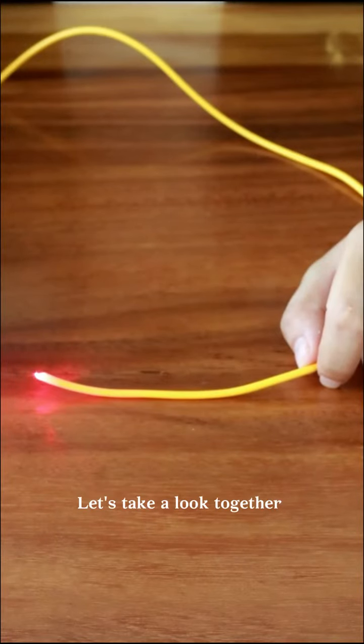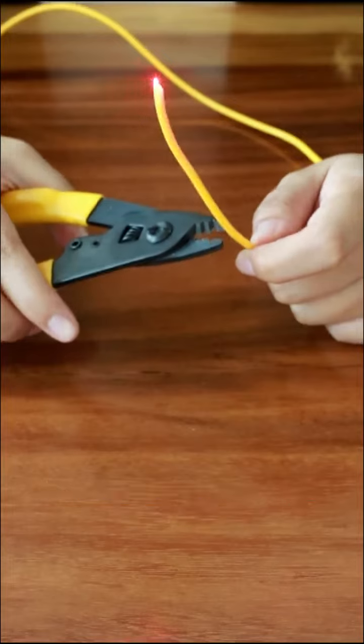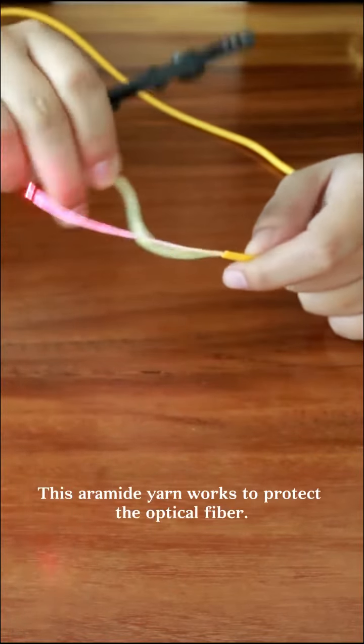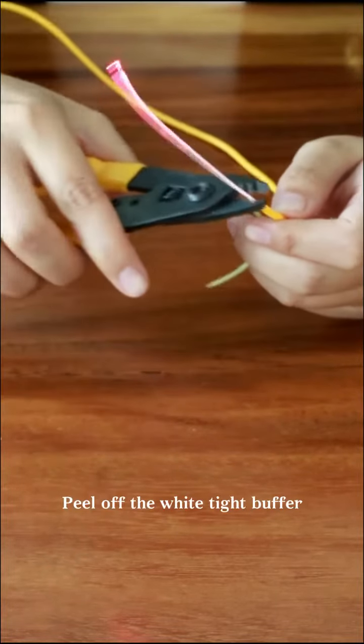Let's take a look together at the transmission principle of light in optical fibers. Peel off the yellow PVC sheath. This aramid yarn works to protect the optical fiber. Peel off the white tight buffer.